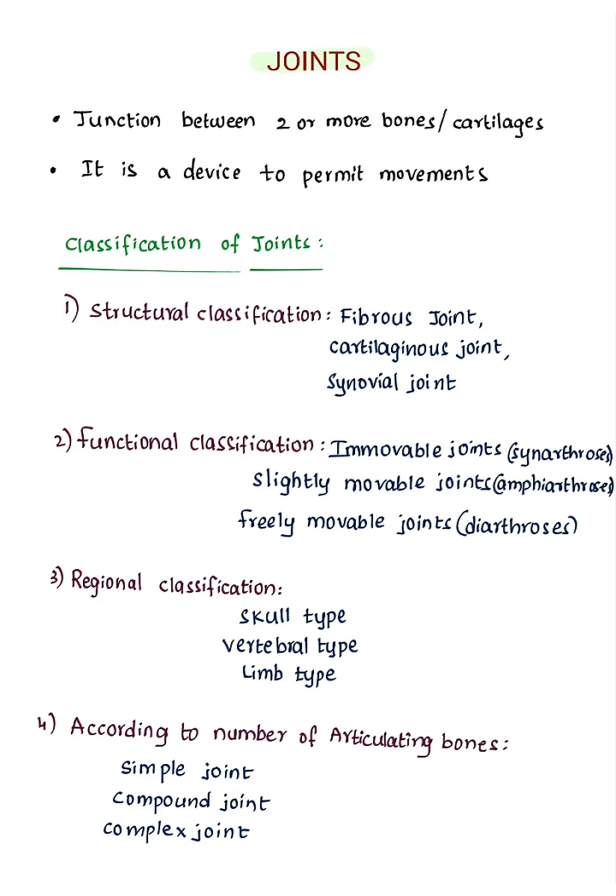According to structural classification, joints are divided into three types: fibrous joint, cartilaginous joint, and synovial joint. In fibrous joints, bones are joined by fibrous tissue — example: sutures of skull. In cartilaginous joints, bones are joined by cartilage — example: intervertebral disc. In synovial joints, the joint cavity is filled with synovial fluid — example: knee joint.